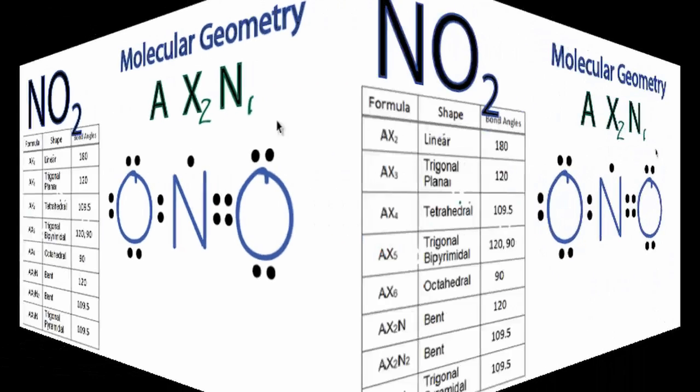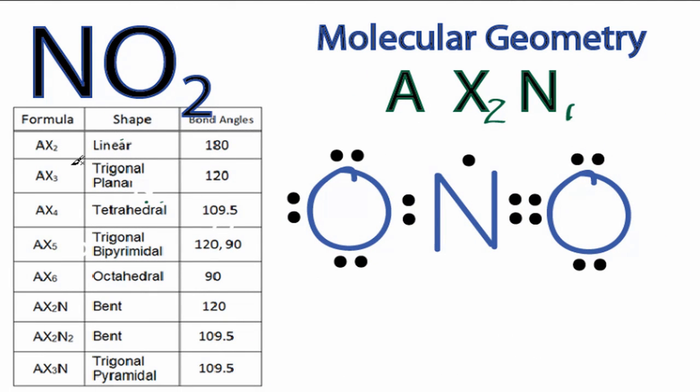Going down our table we have AX2, AX3, all the way down to AX6, and here we have AX2N. That's what we're looking for. That is bent, and the bond angle is going to be about 120 degrees for this molecule.